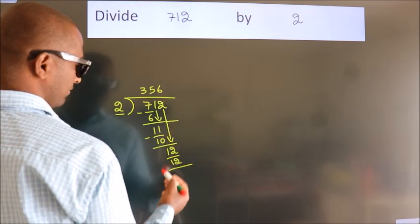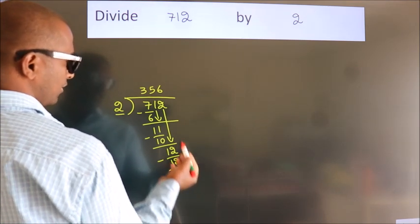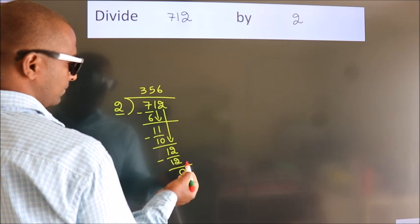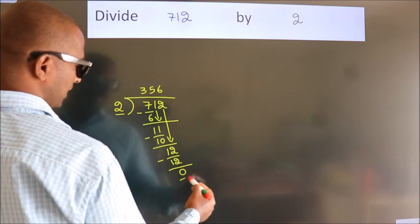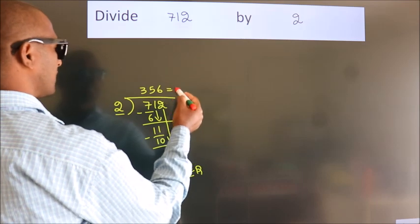Now we subtract, we get 0. After this, no more numbers to bring it down. So we stop here. This is our remainder. This is our quotient.